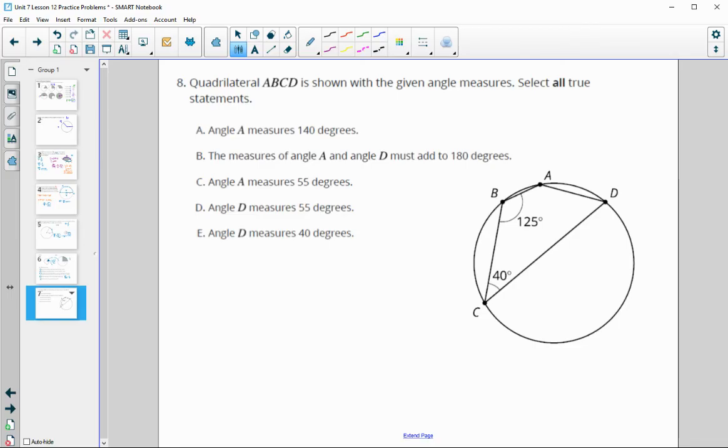Number 8, quadrilateral ABCD is shown with the given angle measurements. Select all true statements. When we look at this, we hopefully see that we have a cyclic quadrilateral, meaning that it is inscribed into a circle, meaning all vertices are touching the circle at the same time.